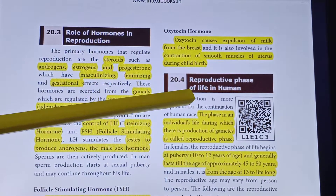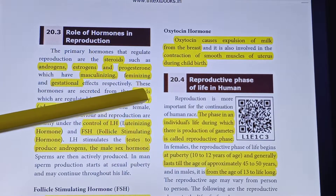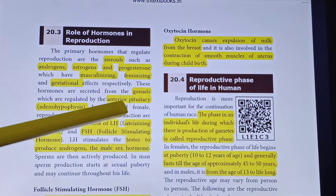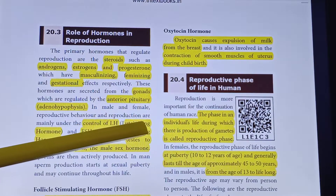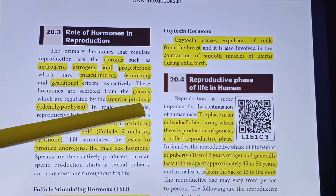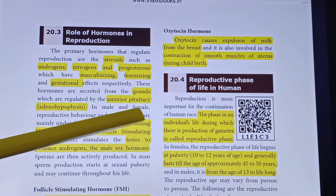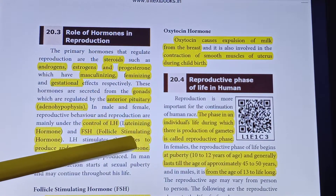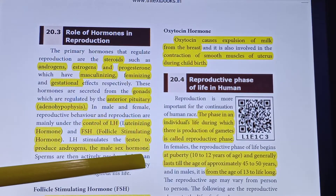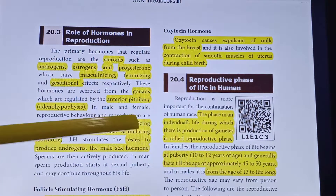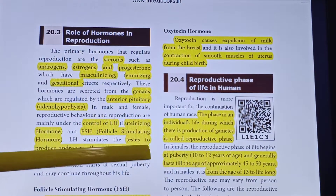The next part of the lesson is the reproductive phase of life in humans. The phase in an individual's life during which there is production of gametes is called the reproductive phase. In females, the reproductive phase of life begins at puberty — around 10 to 12 years of age — and continues until menopause, which is at 45 to 50 years of age.